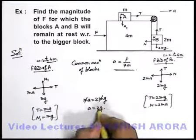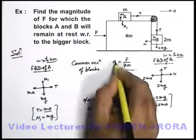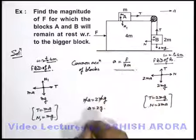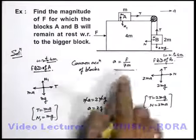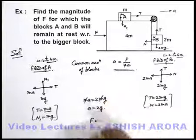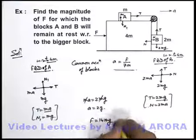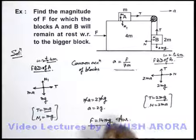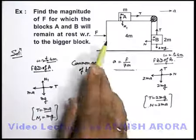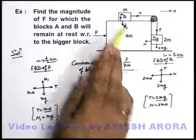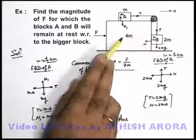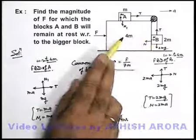Putting the value of a equal to 2g into the acceleration equation, the value of the force is 7m multiplied by 2g, which gives 14mg. This is the answer to our problem: a 14mg external force is required to be applied on the 4m block if we wish A and B not to move with respect to 4m.